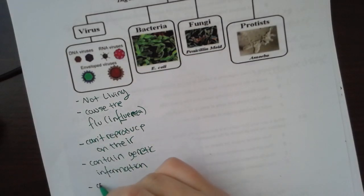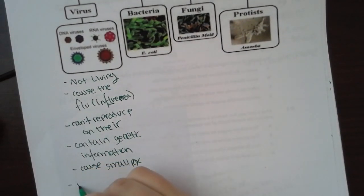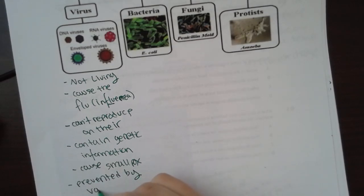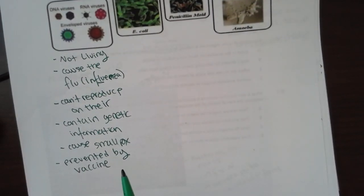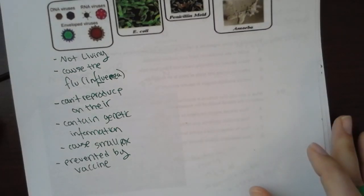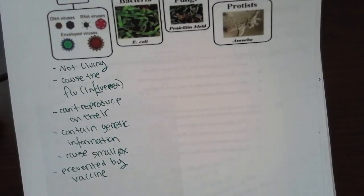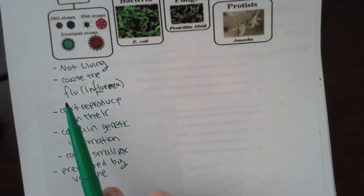Viruses also cause things like smallpox and chickenpox, and they can really only be prevented by vaccines. Edward Jenner issued the cowpox vaccine to prevent smallpox. So if you give your immune system a heads up about what the disease might entail, that's what a vaccine is. That's why you have to get the flu shot every year — you're preventing yourself from getting the flu.